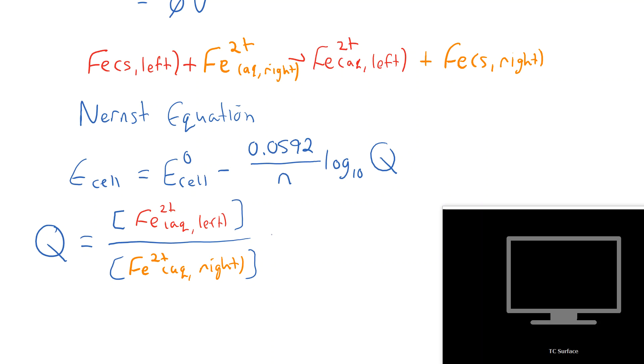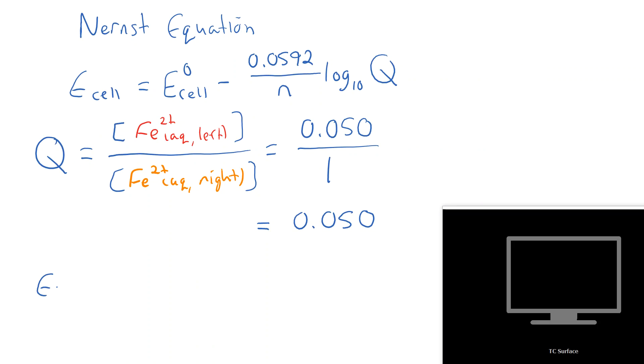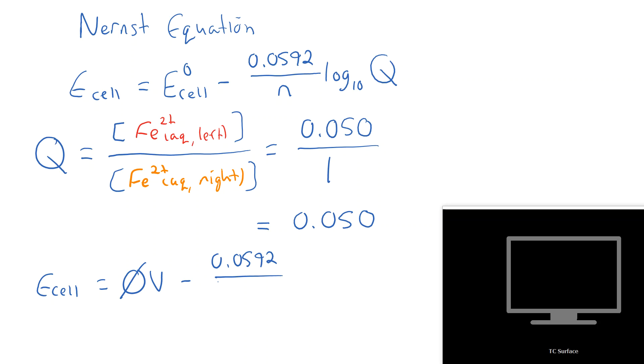Now, we didn't change the concentration on the right. We still have one molar. The concentration on the left, we changed to 0.050. Remember, I'm not writing units here because Q, everything's divided by the reference unit. 0.050 is equal to Q. So now we can plug that in to the Nernst equation. We find that the cell potential is the standard cell potential, which we calculated as 0 volts minus 0.0592 over N.